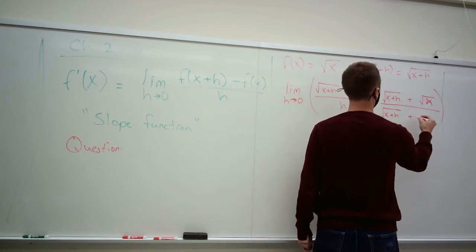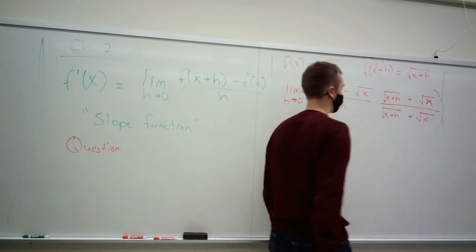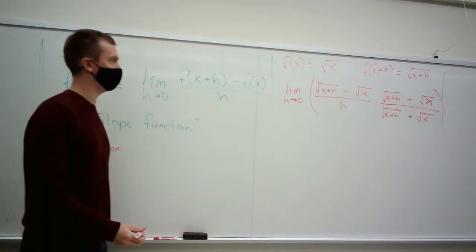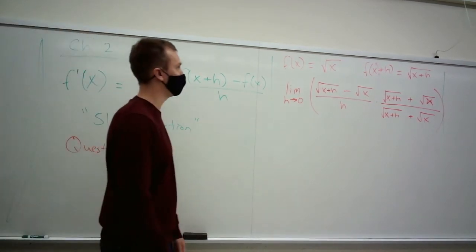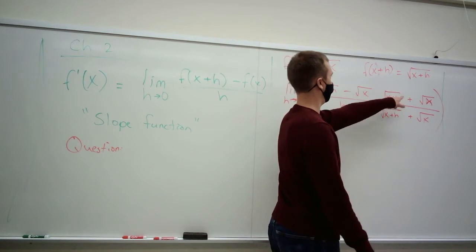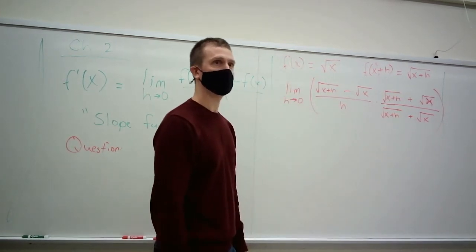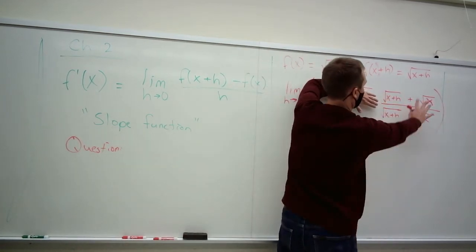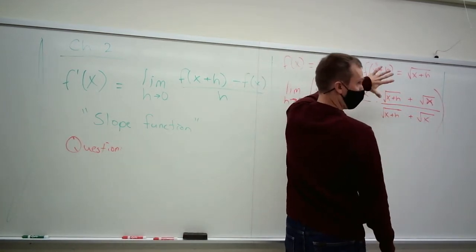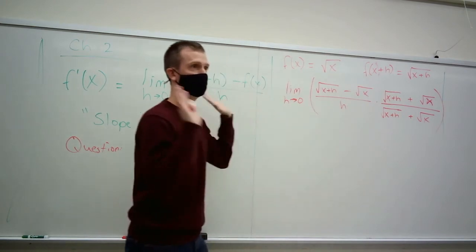And we're going to do that on top and bottom. The reason we're going to do that, on top and on bottom, well, is because this fraction is equal to 1. So, this is just 1. Multiplication by 1 does nothing, right?